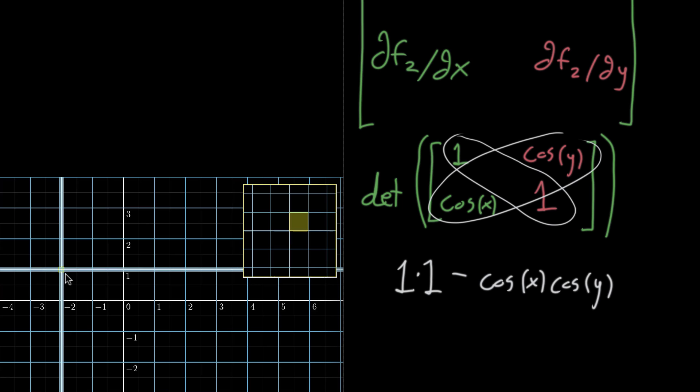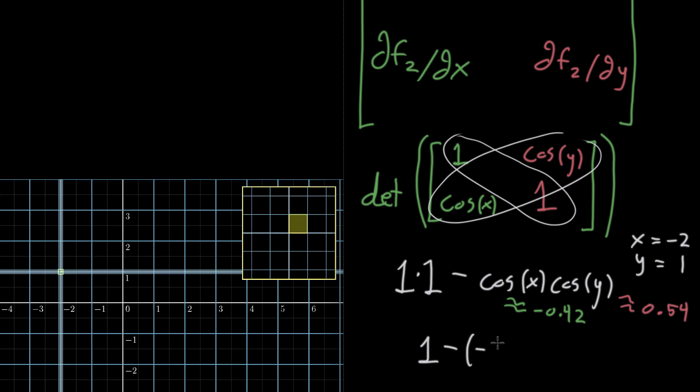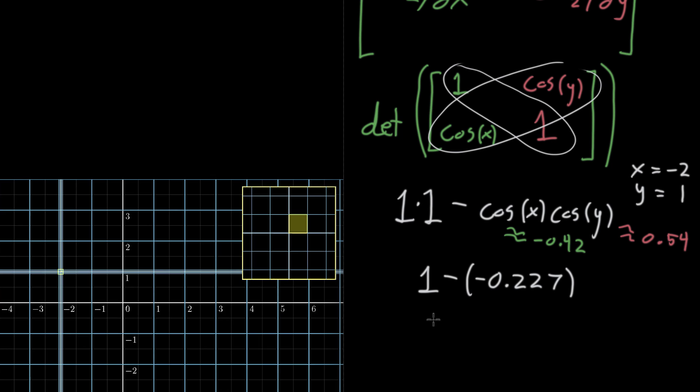As an example, let's plug in this point here that we're zooming in on, (-2, 1). So I'm going to plug in x equals -2 and y equals 1. When you plug in cosine of -2, that's going to come out to be approximately -0.42. And when you plug in cosine of y, cosine of 1 in this case, that's going to come out to be about 0.54. And when we multiply those, when we take 1 minus the product of those, it's going to be about -0.227. And what that means is that the total determinant evaluated at that point, the Jacobian determinant at the point (-2, 1), is about 1.227.